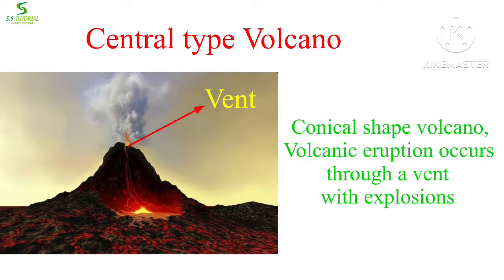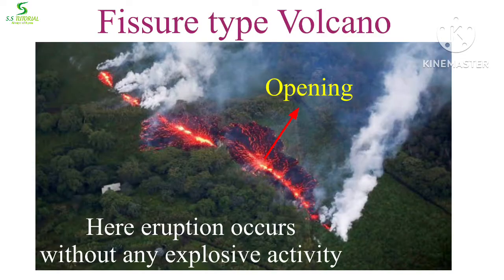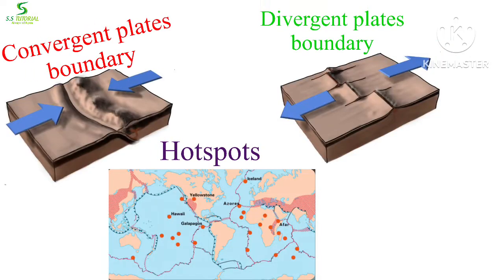Not all volcanoes have a conical shape, and some do not have any vent. They have only a rupture or opening through which volcanic eruption takes place without any explosive activity. This type of volcano is called fissure type volcano.